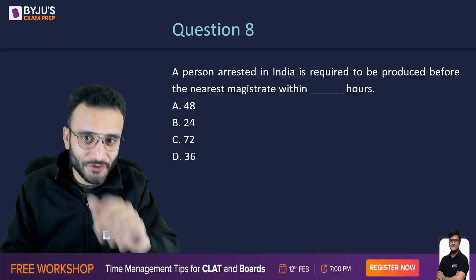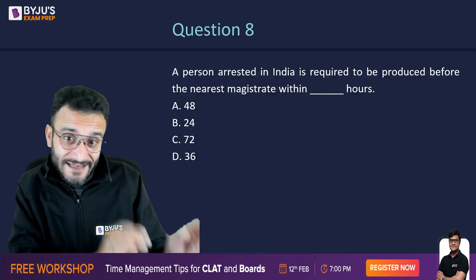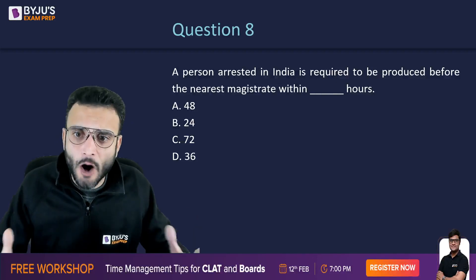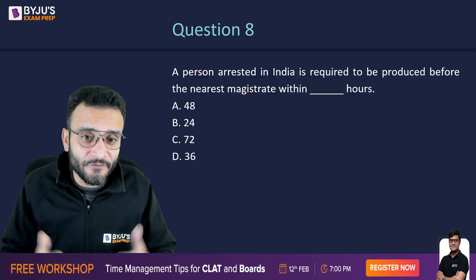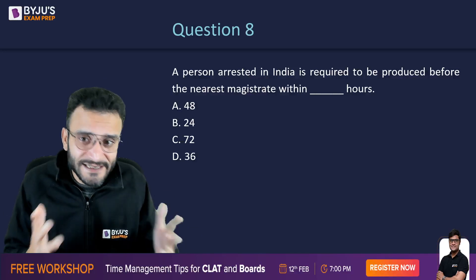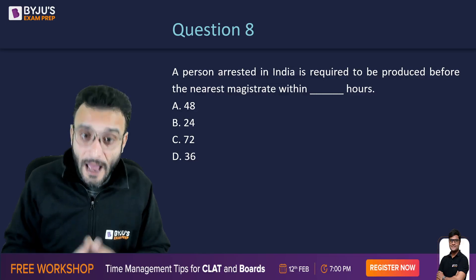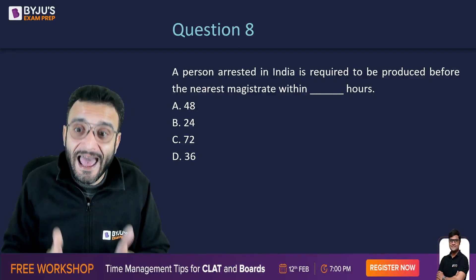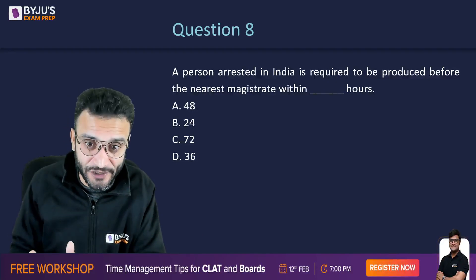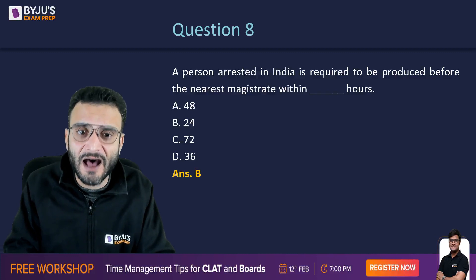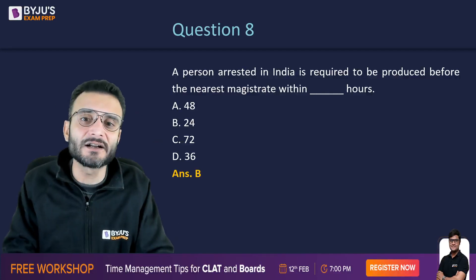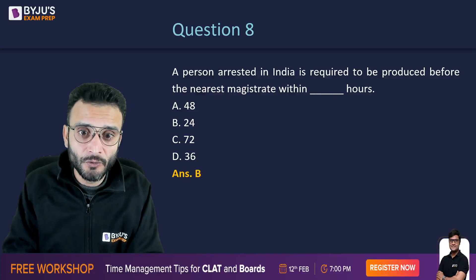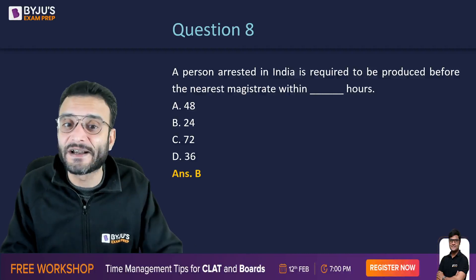Moving on to question number 8: a person arrested in India is required to be produced before the nearest magistrate within how many hours? 48 hours, 24 hours, 72 hours, or 36 hours? A person who is arrested or detained by an authority in India has to be produced before the magistrate within 24 hours. It is a legal requirement that police must produce an arrested person before the nearest magistrate within a period of 24 hours.